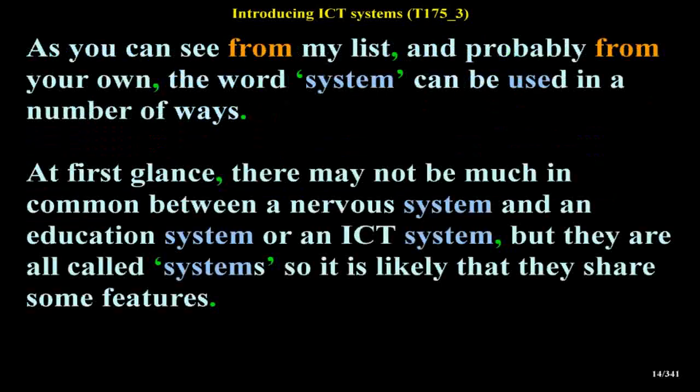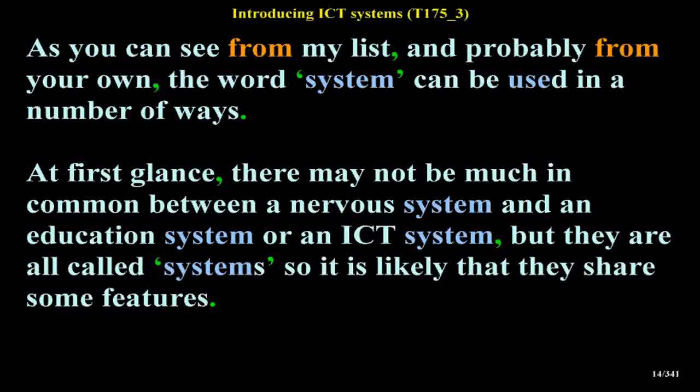As you can see from my list, and probably from your own, the word system can be used in a number of ways. At first glance, there may not be much in common between a nervous system and an education system or an ICT system, but they are all called systems so it is likely that they share some features.